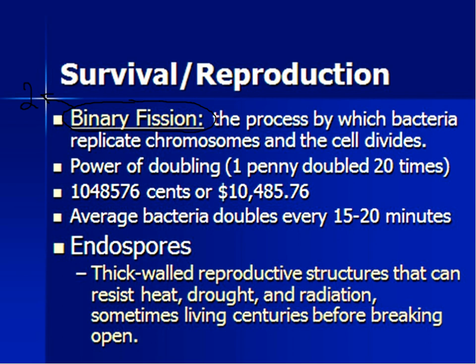If you double a penny just 20 times — so if you have a penny, you double it to two pennies, two becomes four, four becomes eight, eight becomes 16 — if you do that same math problem 20 times, one penny doubled 20 times would equal $10,485.76, or 1,048,576 pennies. That just shows you how quickly bacteria can reproduce, especially the harmful kind. So just by doubling 20 times, you can have over a million bacteria come out of one. The average bacteria doubles every 15 to 20 minutes, so in about five or six hours you can start with one bacteria and get to over a million.